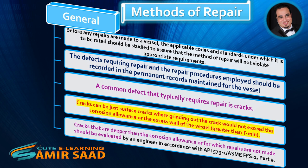A common defect that typically requires repair is cracks. Cracks can be just surface cracks where grinding out the crack would not exceed the corrosion allowance, or the excess wall of the vessel greater than T minimum. Cracks that are deeper than the corrosion allowance, or for which repairs are not made, should be evaluated by an engineer in accordance with API 579, ASME-FFS, Part 9.